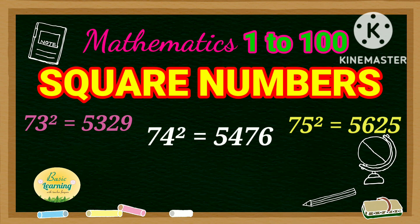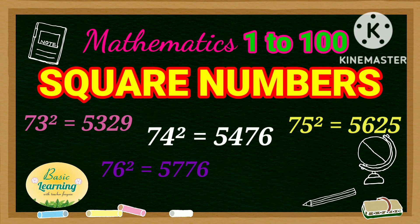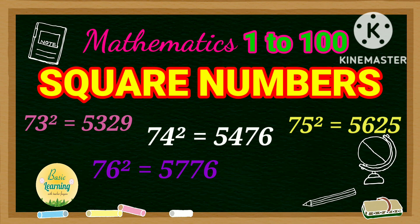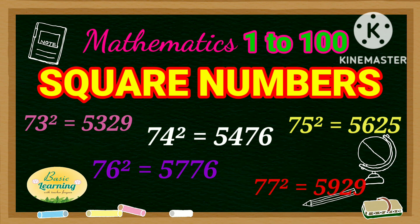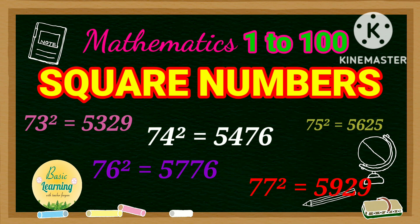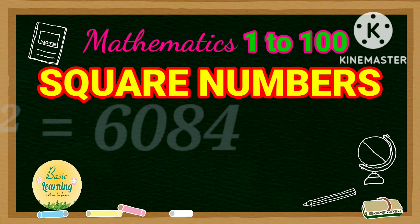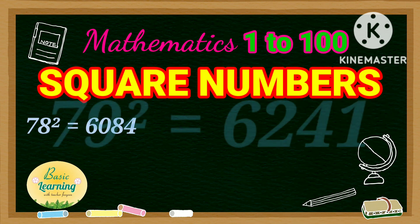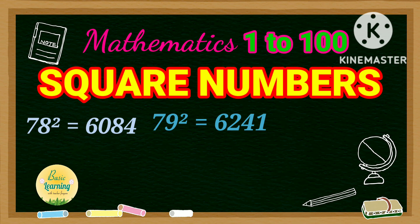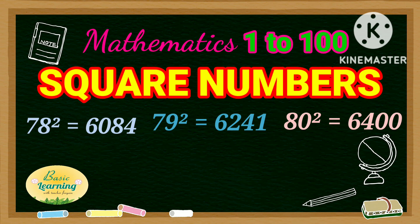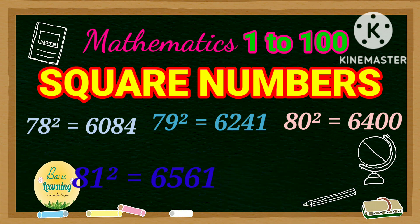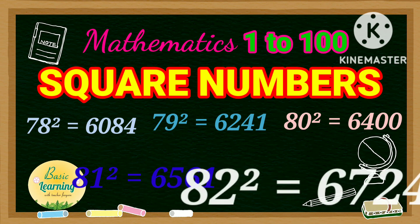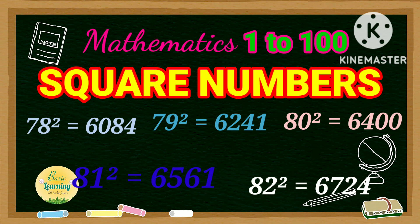Square of 76 is 5,776. Square of 77 is 5,929. Square of 78 is 6,084. Square of 79 is 6,241. Square of 80 is 6,400. Square of 81 is 6,561.